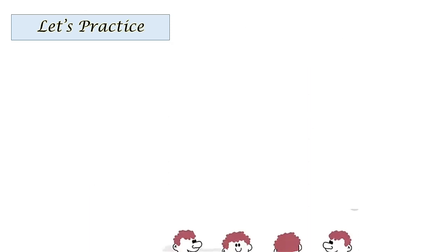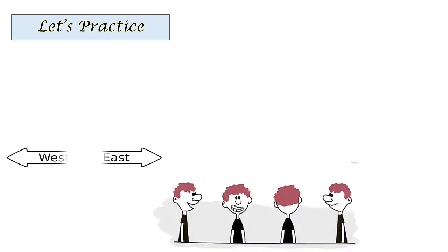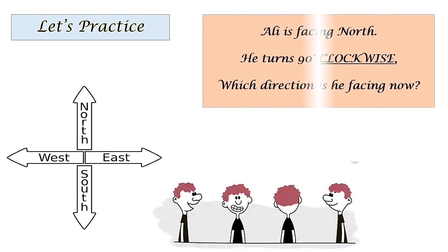Let's practice. This is a four point compass. And the question says: Ali is facing north. He turns 90 degrees clockwise. Which direction is he facing now?